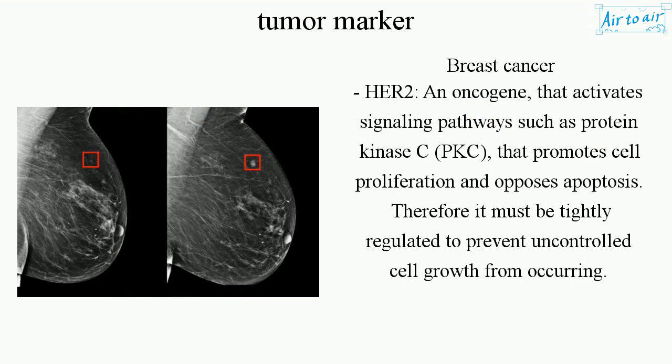Breast cancer: HER2, an oncogene that activates signaling pathways such as protein kinase C, PKC, that promotes cell proliferation and opposes apoptosis. Therefore it must be tightly regulated to prevent uncontrolled cell growth from occurring.